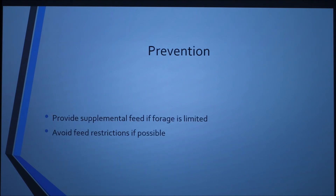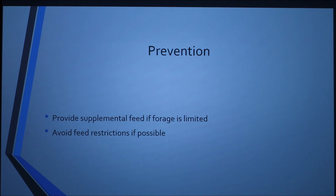For prevention, you can ensure cows calve at a recommended BCS target. If they are at that target, you can feed springers 80 to 90 percent of their energy requirement. You can provide supplemental feed and forage, and avoid feed restrictions. If there's going to be a bad snowstorm or bad weather coming up, make sure they have adequate amounts of feed and dry feed.